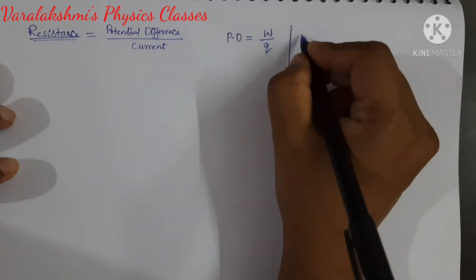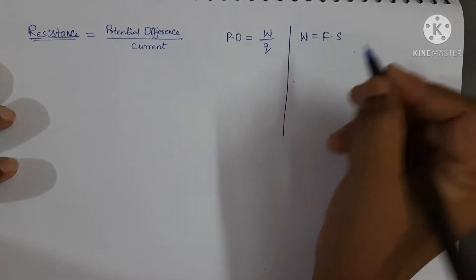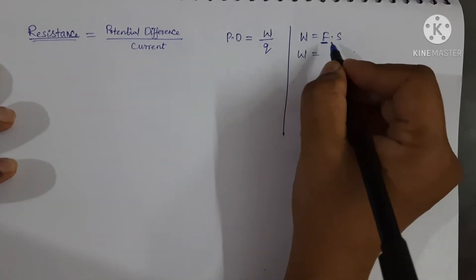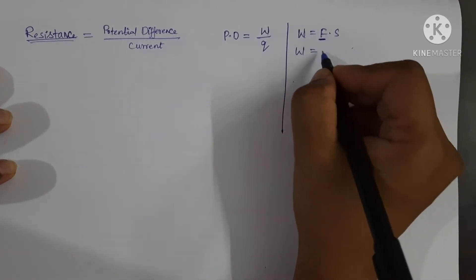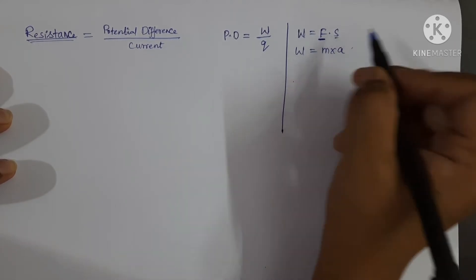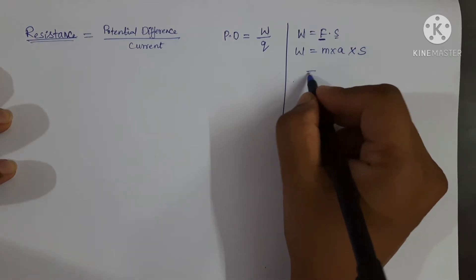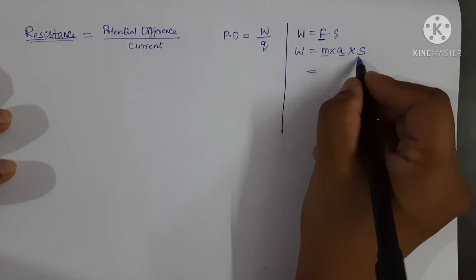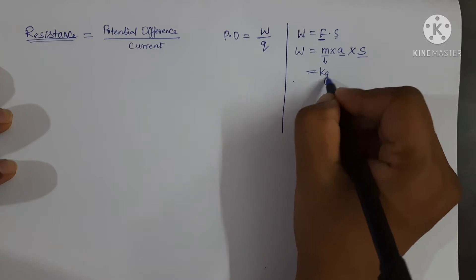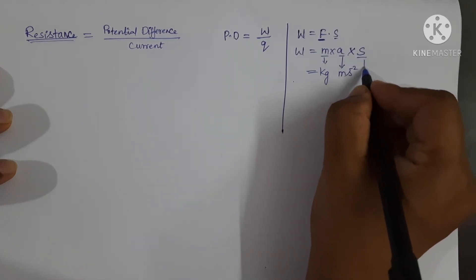Work done is equal to force into displacement. Force is equal to mass into acceleration, so work done equals mass into acceleration into displacement. Now let us write the SI unit for each term: for mass, kilogram; for acceleration, meter per second square.